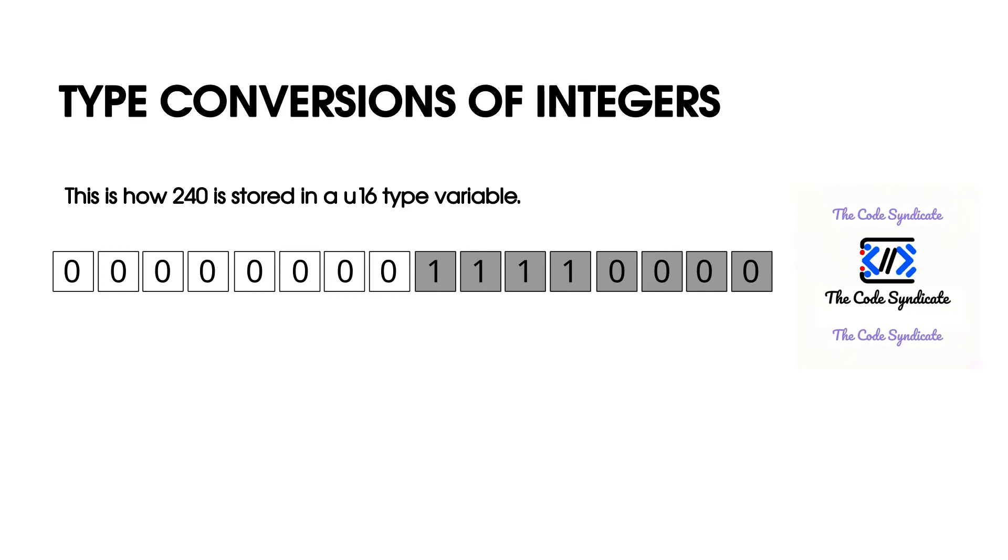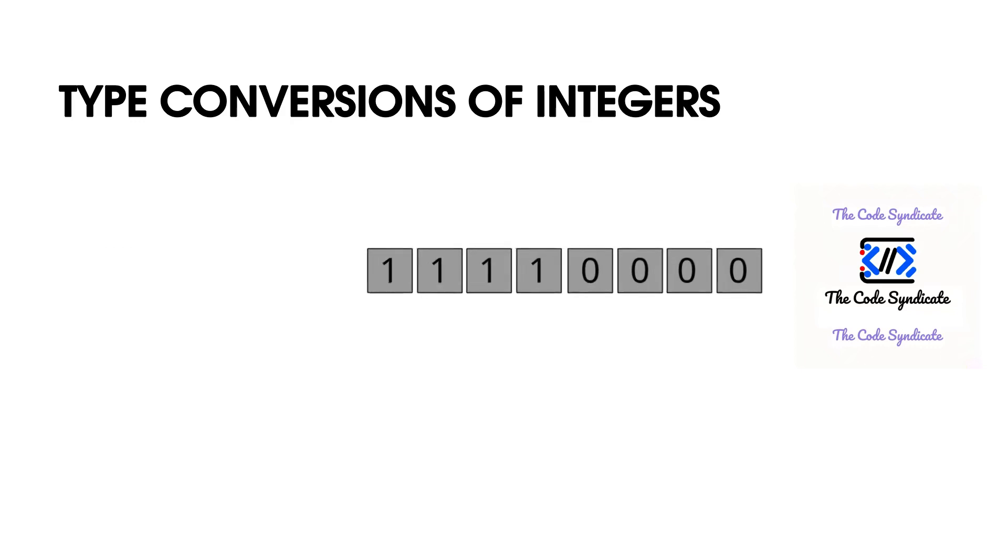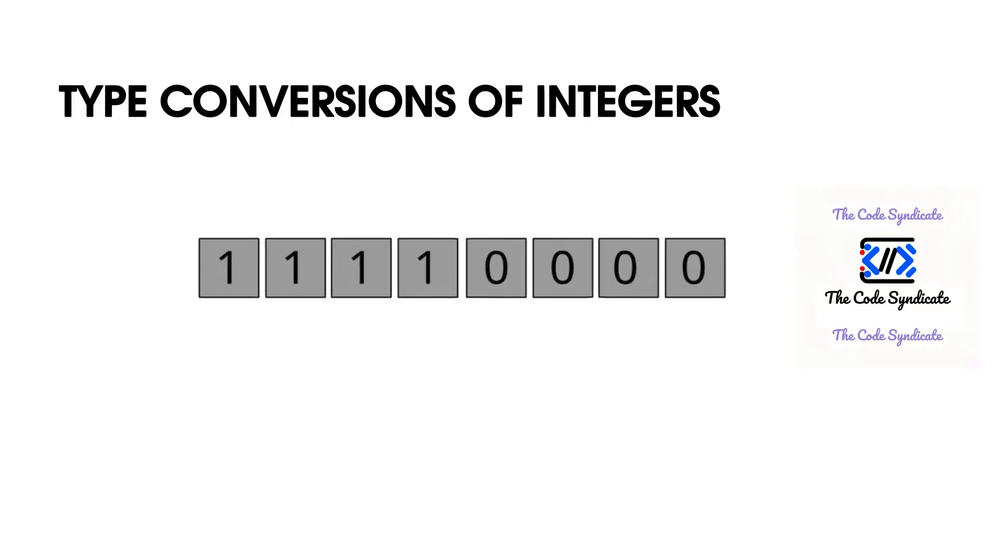When we try to convert it to u8 type, as u8 cannot store all the bits of a u16 type integer, what it does is it simply obtains the last 8 bits information only.